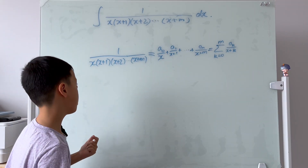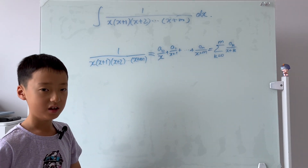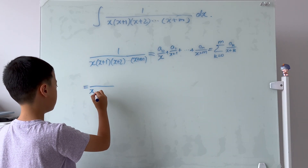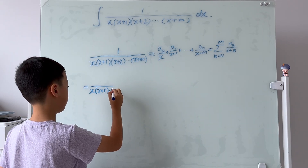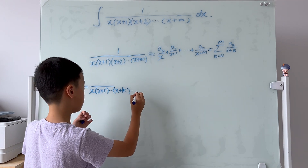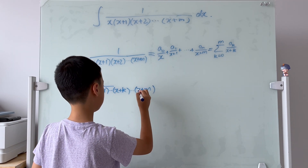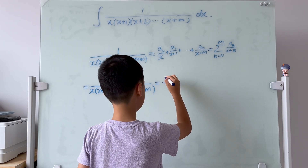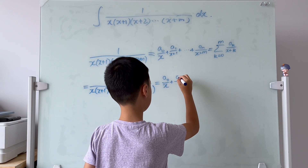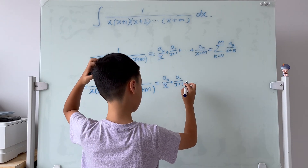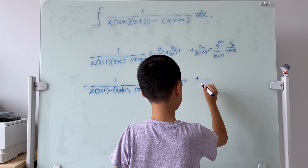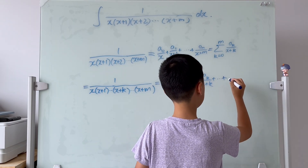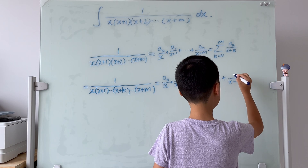To make this extra clear, I'm going to rewrite the left hand side and the right hand side so that they both include k clearly. I'll rewrite this into x times x plus 1 times all the way to x plus k, and then times all the way to x plus m. On the top will still be 1. And then I will also take out x plus k, so this will all stay the same, plus all the way to x plus k on the bottom over a_k, and then plus all the way to x plus m on the bottom and a_m on the top.